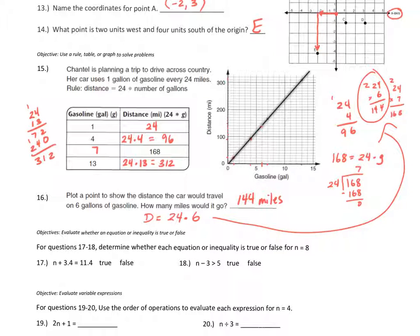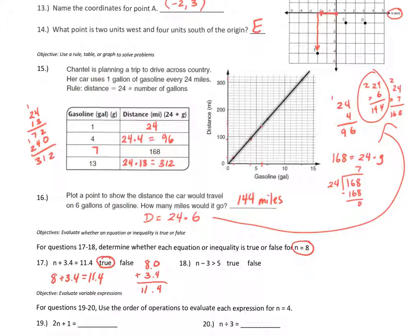The next objective is to evaluate whether an equation or inequality is true or false, for n equals 8. For question 17, plugging in 8: 8 plus 3.4 equals 11.4 — that is a true statement. For question 18: 8 minus 3 equals 5, but 5 is not greater than 5 — 5 equals 5 — so this inequality is false.